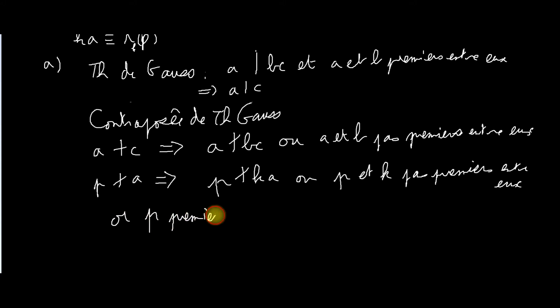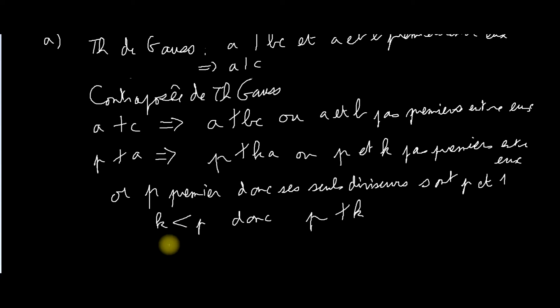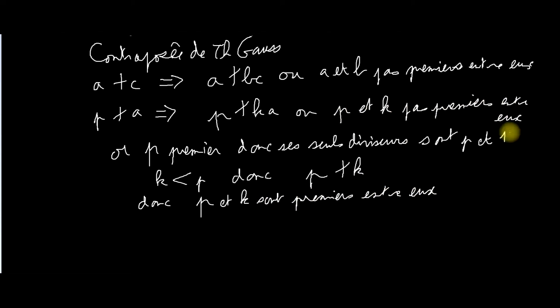Or, P est premier, donc ses seuls diviseurs sont P et 1. K étant strictement plus petit que P, P ne divise pas K. Donc, on obtient que P et K sont premiers entre eux. K ne divise pas P non plus. Ou alors, K égale 1, mais dans ce cas-là, ils sont aussi premiers entre eux. Conclusion. P ne divise pas KA, puisque l'autre option a été exclue.